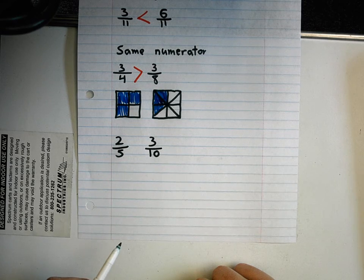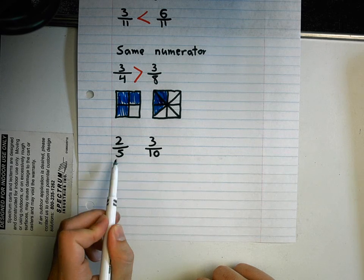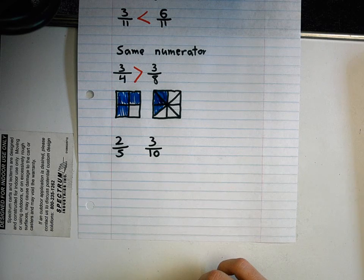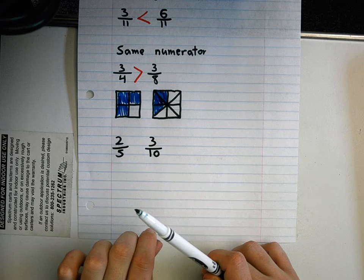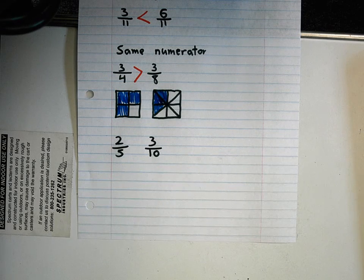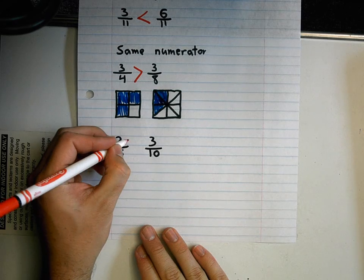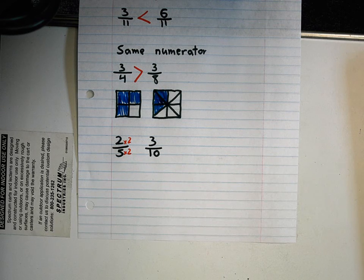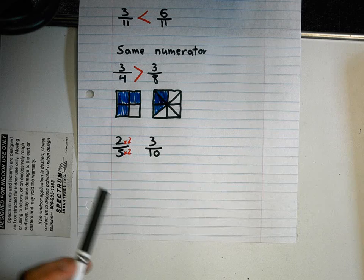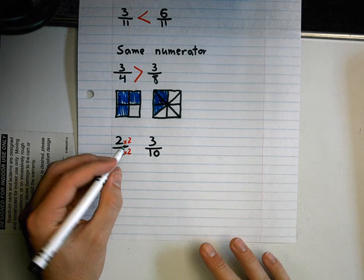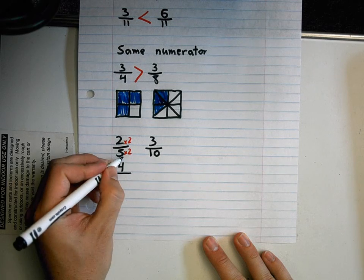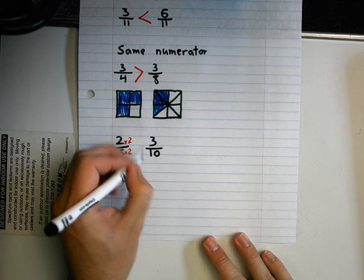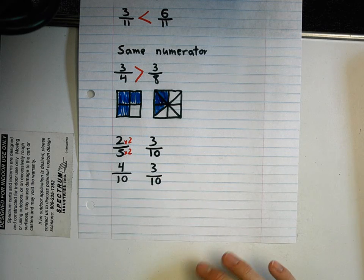I'm going to look at these fractions and see if there's any way I can make this denominator become this denominator, or this denominator become this denominator. If I have five, I can easily turn five into ten by multiplying the top and bottom by the same number — multiply the top by two and the bottom by two. That's going to leave me with a new fraction, but it's still going to be the same equivalent fraction. So this turns into four tenths: two times two is four, five times two is ten. And I didn't do anything to this one, so it's three tenths.